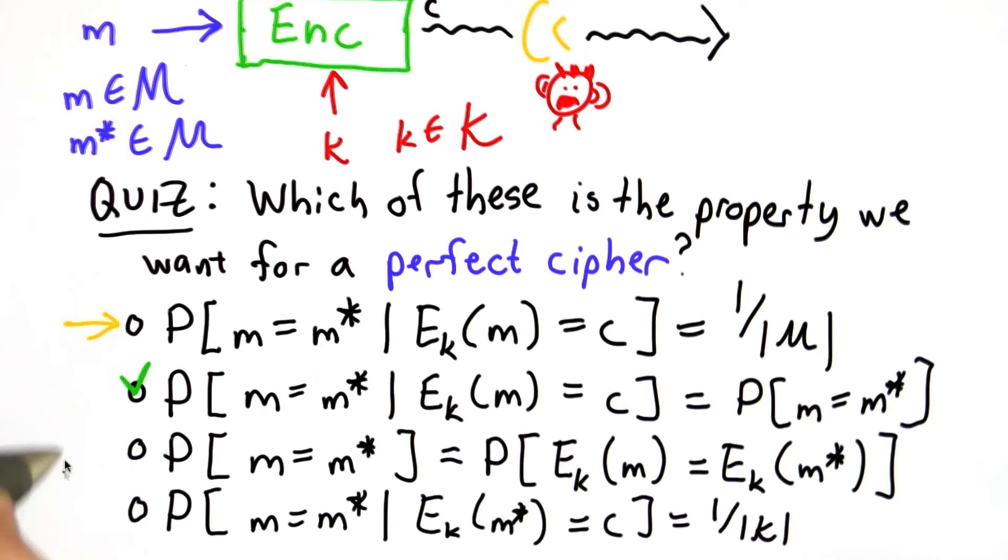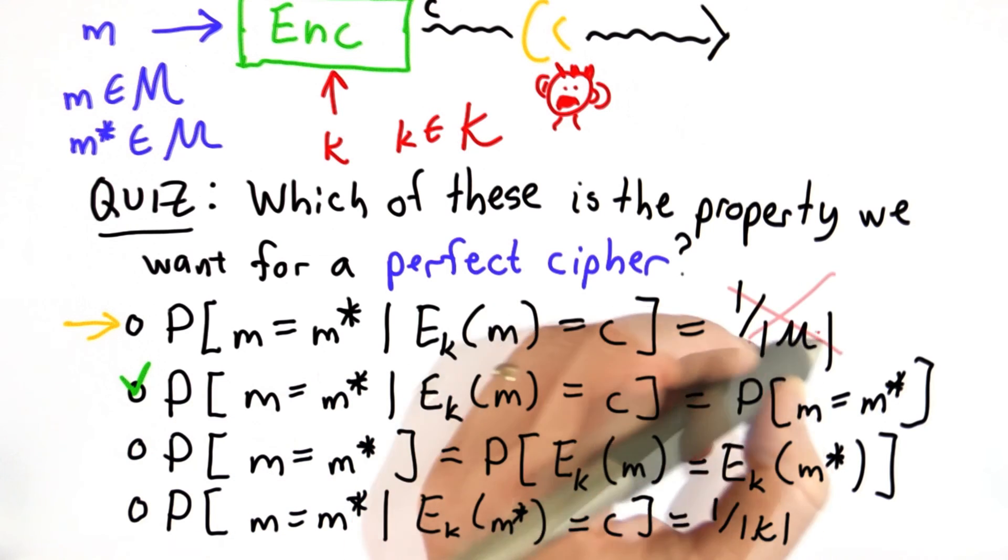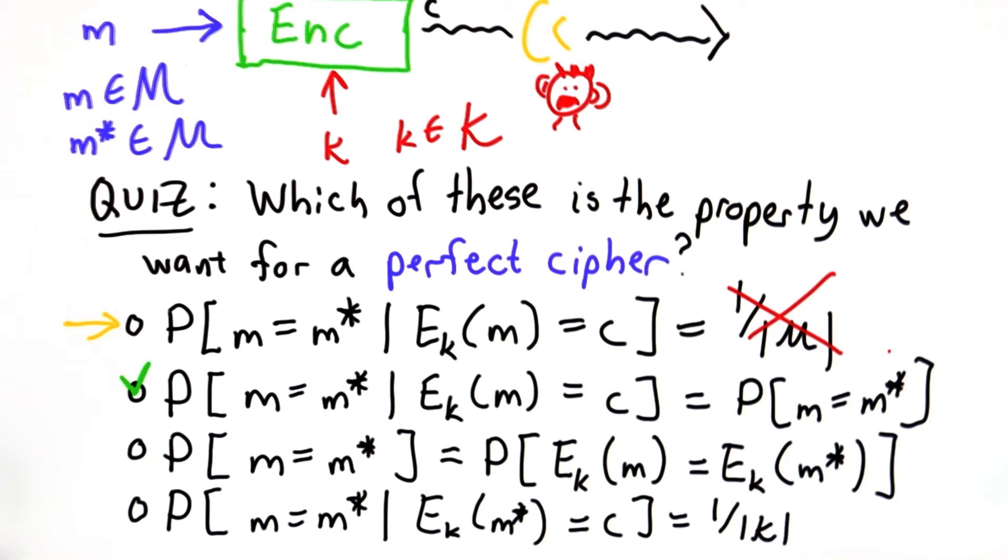So that's why choice 1 is not the definition we want. We want choice 2 where whatever the attacker already knew about the probability that the message is m star is not affected in any way by seeing the ciphertext.